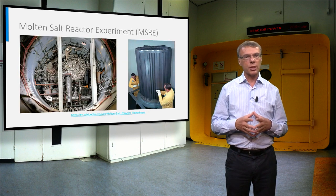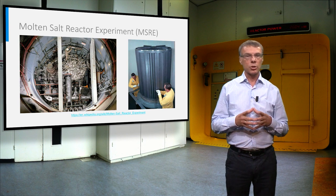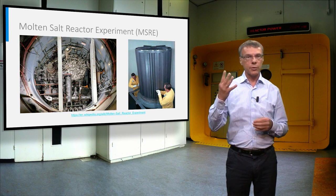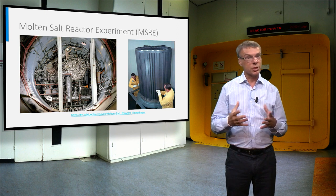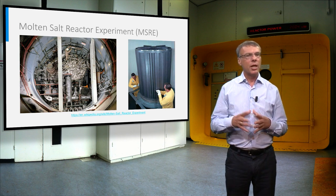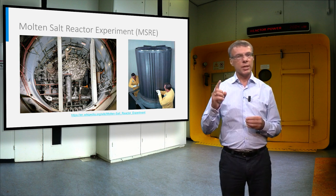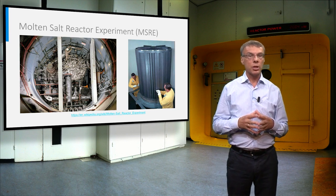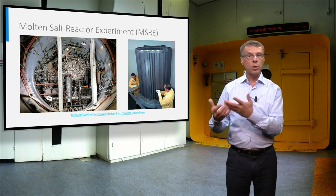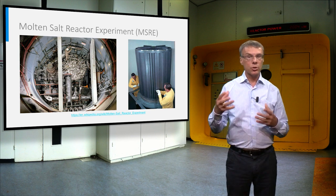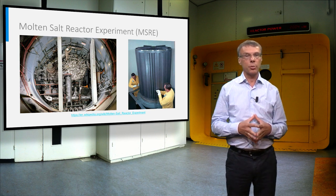The molten salt technology has already been demonstrated in the sixties of last century. The molten salt reactor experiment ran for four years in Oak Ridge with great success. However, this demonstration reactor contained not yet thorium in the salt, but operated on uranium and plutonium. In this test reactor also the salt was not cleaned during operation.